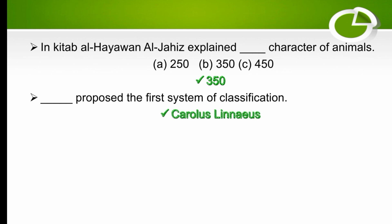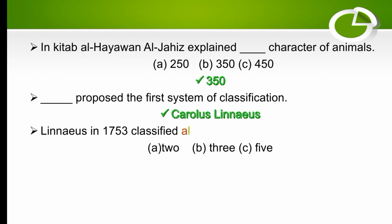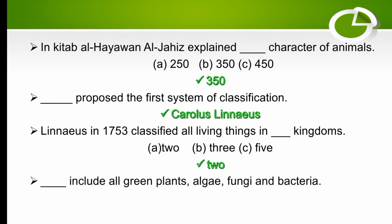Carlos Linnaeus proposed the first system of classification. Linnaeus in 1753 classified all living things into two kingdoms — kingdom Animalia and kingdom Plantae — which is considered the first system of classification.